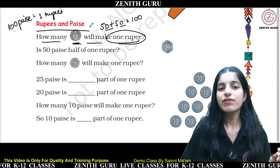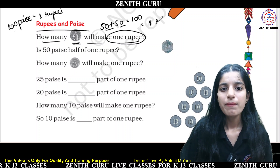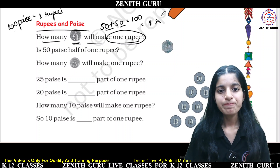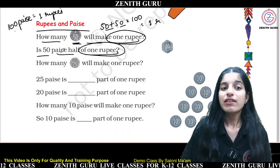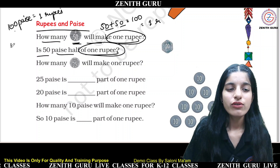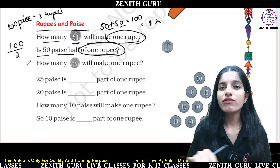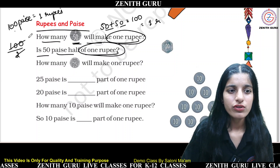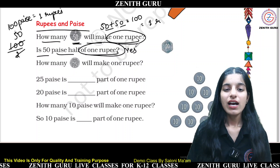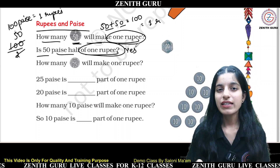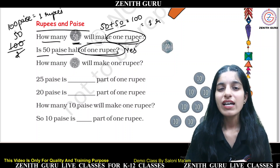50 paise is half of 1 Rupee. If you have 100 paise and divide it in two parts — divided by 2 — you get 50. So 100 paise equals 1 Rupee, and 50 paise is half of 1 Rupee.